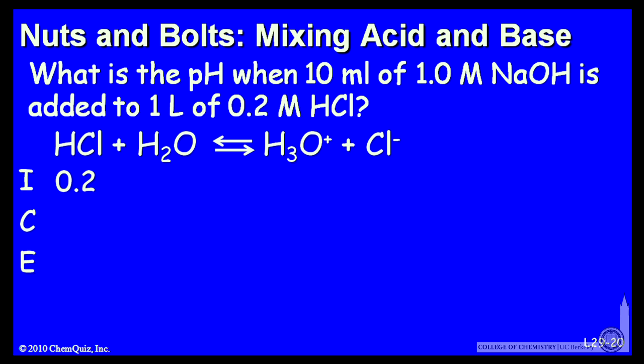Initially, I can add 0.2 moles of HCl to a liter of water to form 0.2 molar HCl. That'll immediately dissociate. The water concentration I don't have to keep track of. It doesn't appear in equilibrium constant expressions. That's a pure liquid. The H3O plus concentration in pure water is 10 to the minus 7, and initially, no chlorine ions.